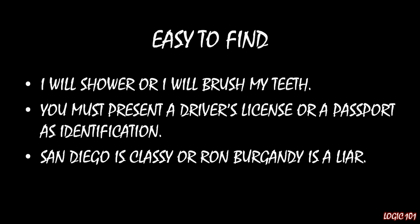This last example is a little tricky, so let's walk through it: 'San Diego is classy, or Ron Burgundy is a liar.' It could be that San Diego is classy and Ron Burgundy has been telling the truth, so he's not a liar. It could be that San Diego is not classy, in which case Ron Burgundy was lying. And because this is the inclusive OR, it could also be that San Diego is classy and Ron Burgundy is a liar for a completely different reason. These are easy to find because they contain OR, and when we convert them to logical notation, we use that V or wedge to represent the inclusive OR.